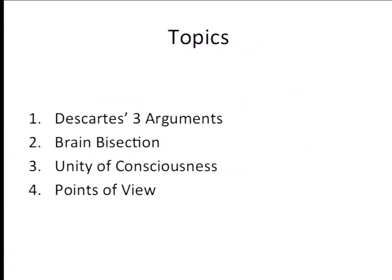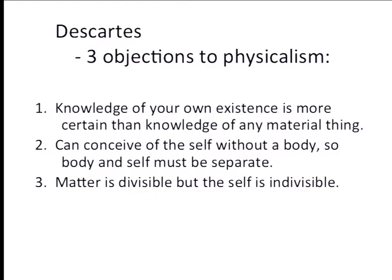Let's start by reviewing Descartes' three arguments for saying that the mind is different from the brain — his three objections to physicalism. The first: your knowledge of your own existence is more certain than your knowledge of any physical thing.